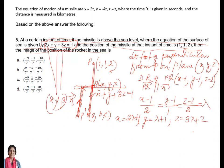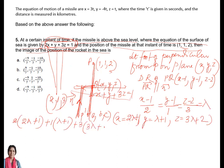This point (x, y, z) lies on the plane 2x + y + 3z = 1. Substituting: 2(2λ + 1) + (λ + 1) + 3(3λ + 2) = 1. Solving this gives λ = -4/7.